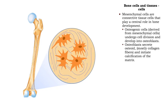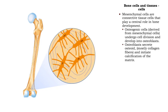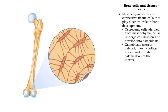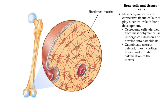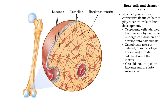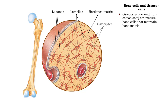Osteoblasts initiate the mineralization of the matrix with mineral salts. As the matrix hardens, the osteoblasts become trapped in small spaces called lacunae and mature into osteocytes. Osteocytes maintain bone tissue by exchanging nutrients and wastes with the bloodstream through canals and canaliculi.